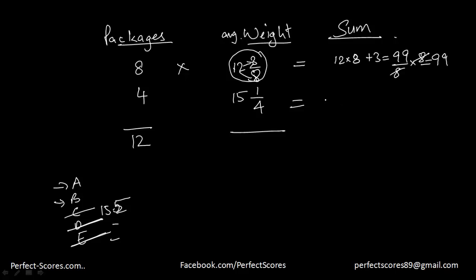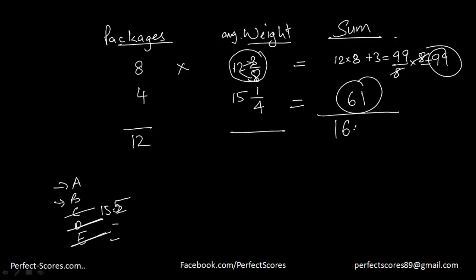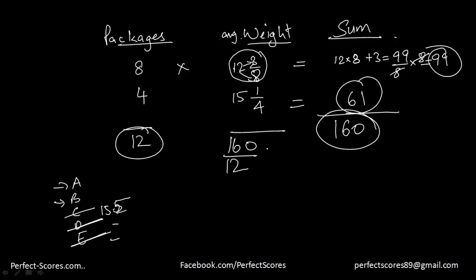Similarly, the total sum for the second group would be equal to 61. And if I calculate the total sum of both groups, that comes down to 160. My total average weight comes down to be the sum divided by the number of packages, which would be 160 divided by 12.